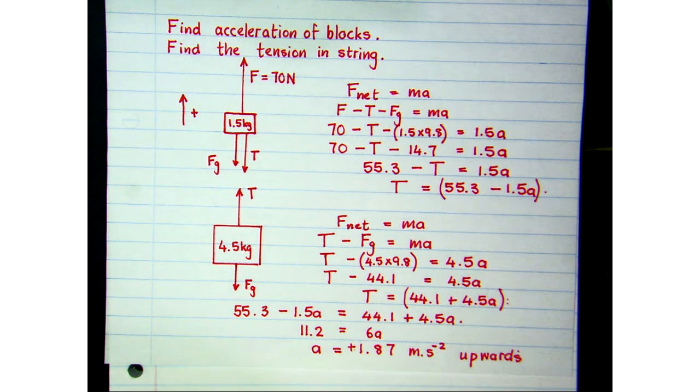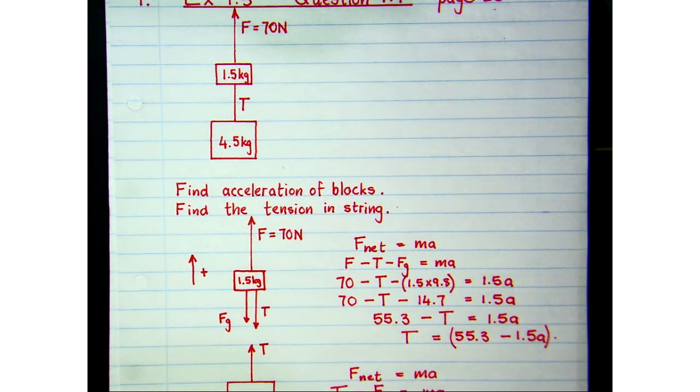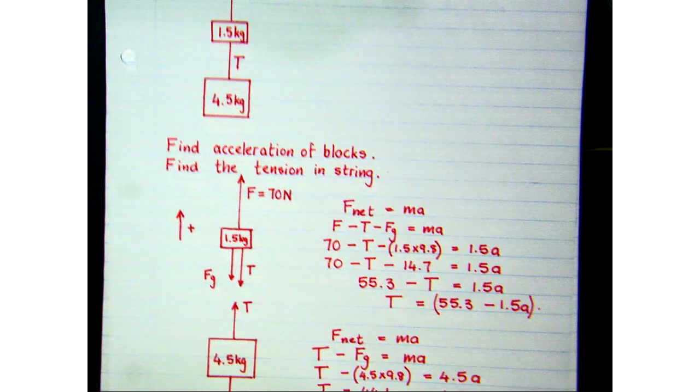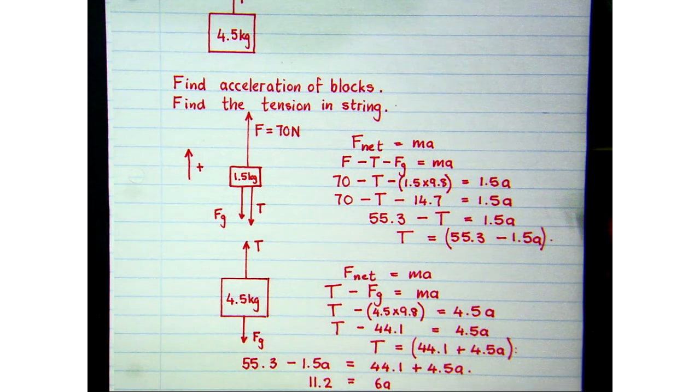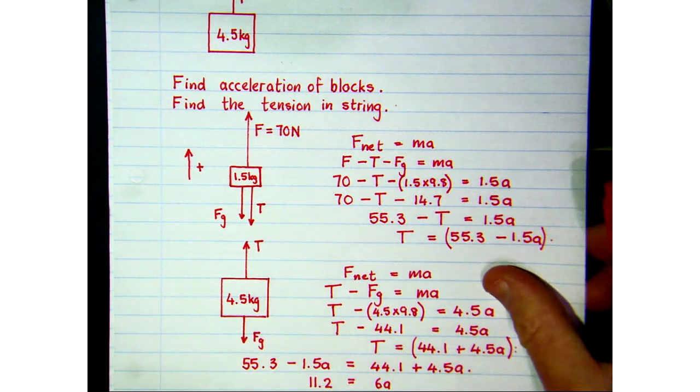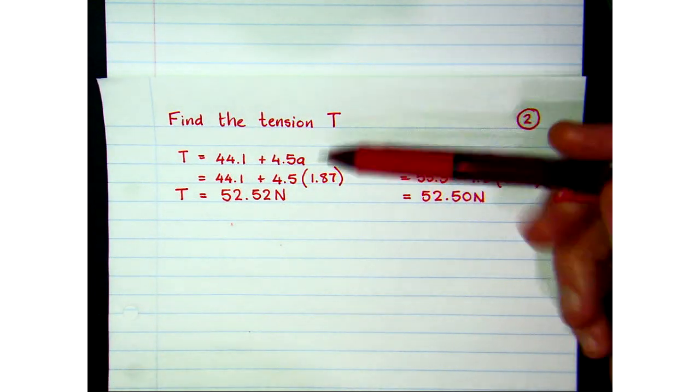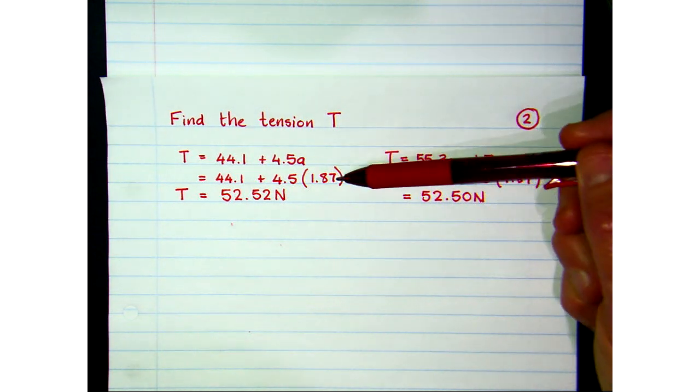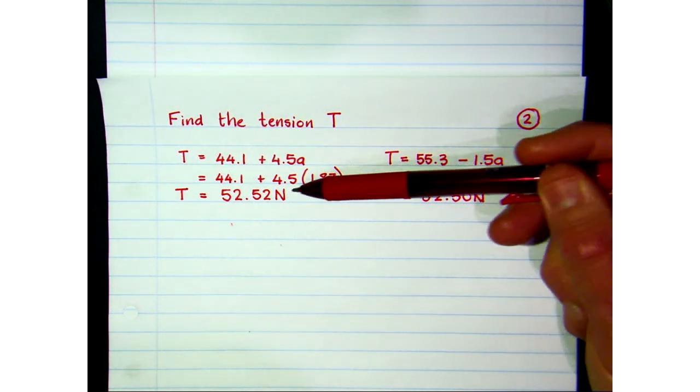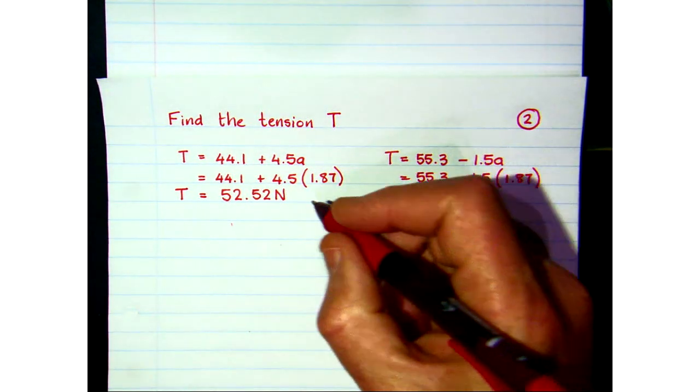Okay, in the second part of that question, we are asked to find the tension in the string. So we have two expressions for the tension in the string and we can simply substitute that acceleration into any one of those two and find the corresponding tension. So here's the solution to that. If we use the 4.5 kg, pop the acceleration in, and we get a tension upwards of 52.52 newtons.